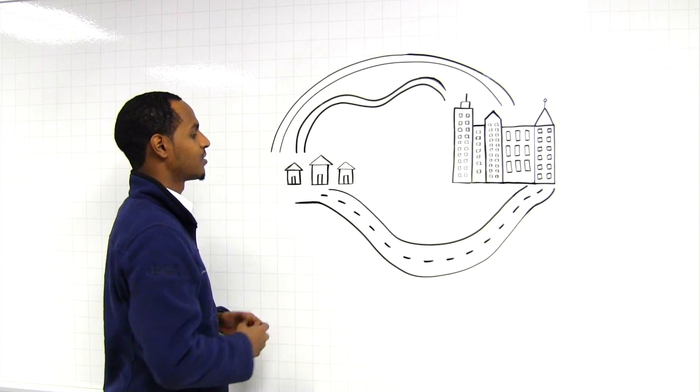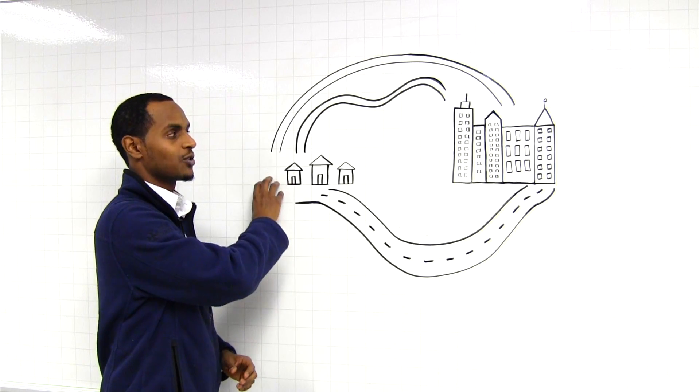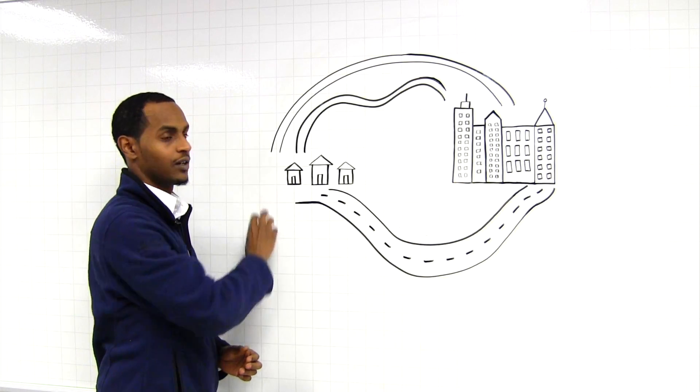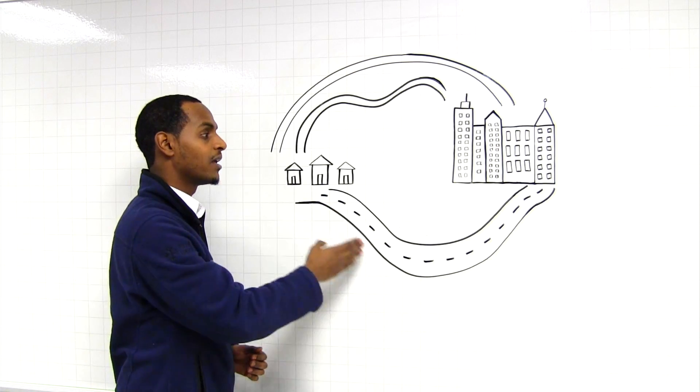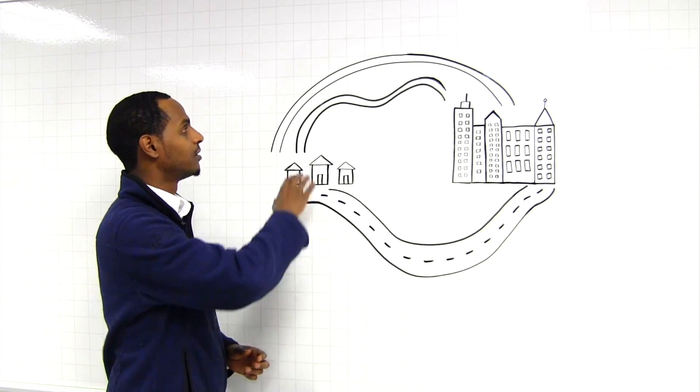The best way to think about that is to think about a road traffic system. Here you have a residential area and a city area. Residents can take a number of different routes, including a main highway which is comprised of multiple lanes, or different side roads.